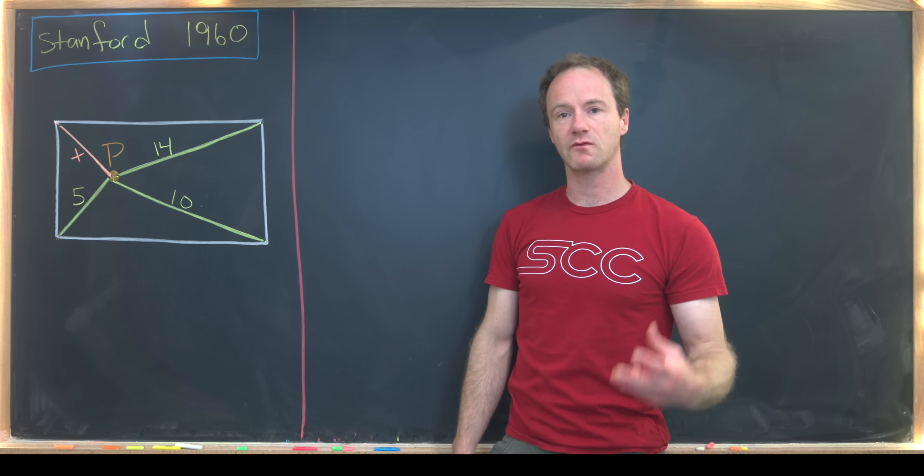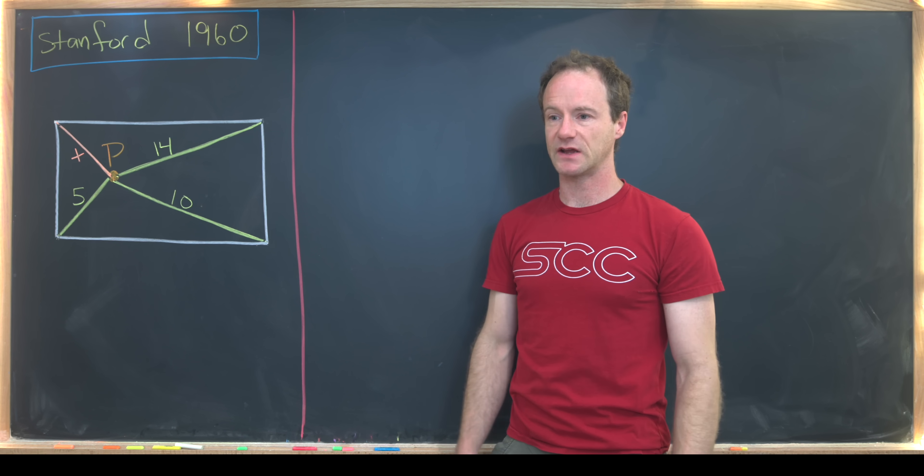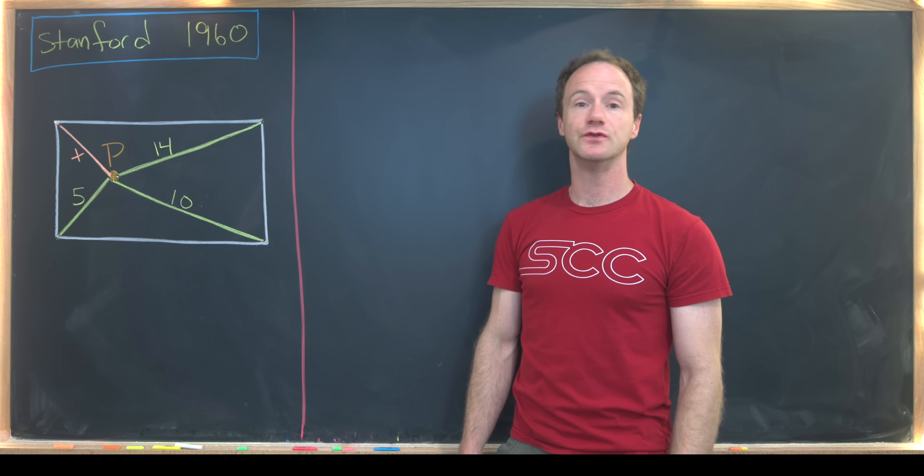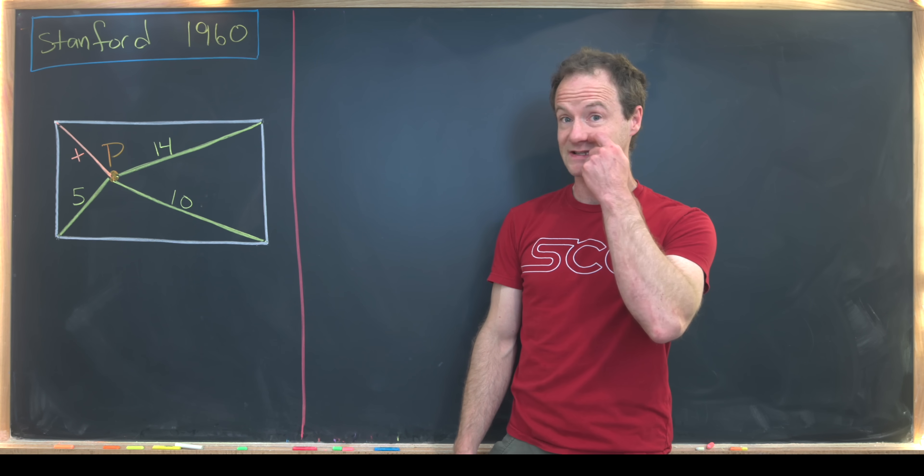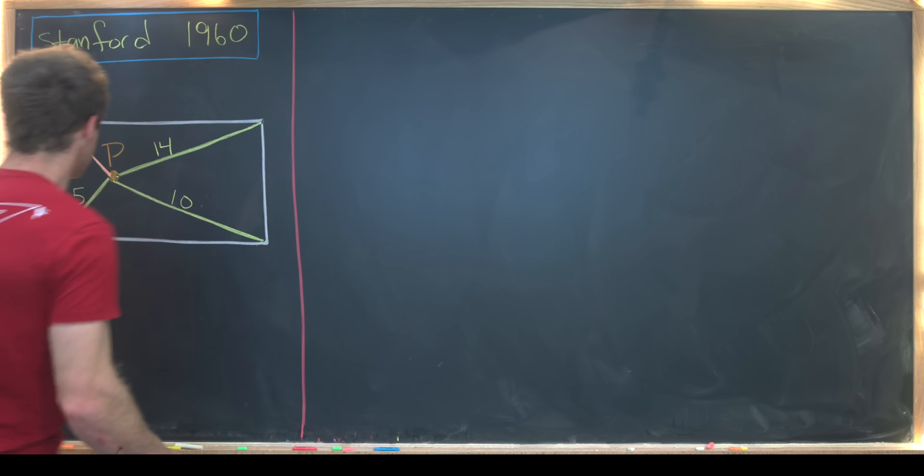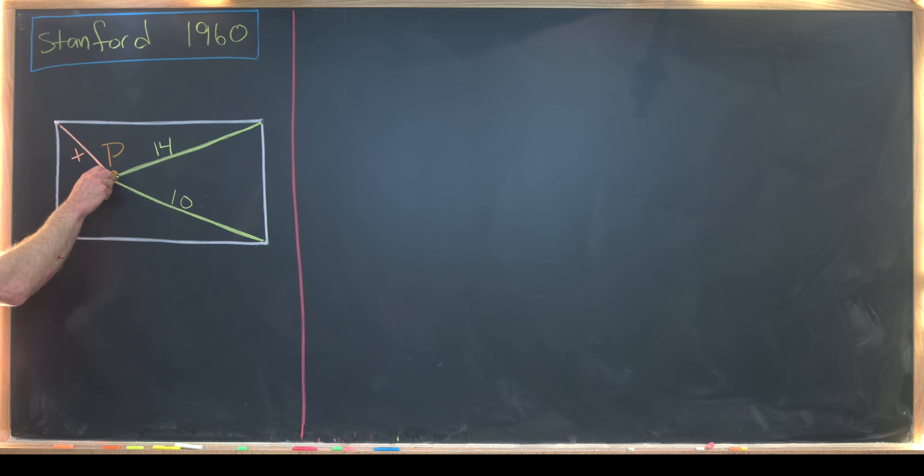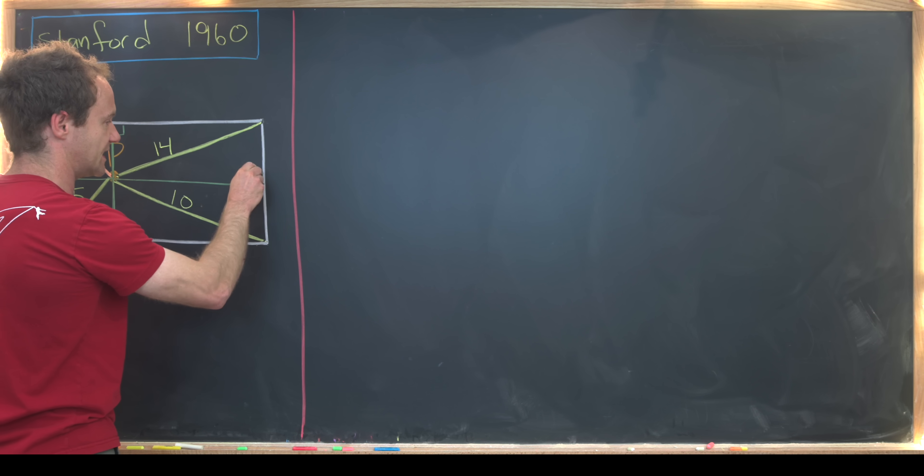Since we've got rectangles and triangles within rectangles, we can probably decompose this into a bunch of right triangles and then use the Pythagorean theorem. And that's exactly what we're going to do. I'll drop a line from here that is orthogonal to the bottom edge and then push it up so that it's orthogonal to the top edge.